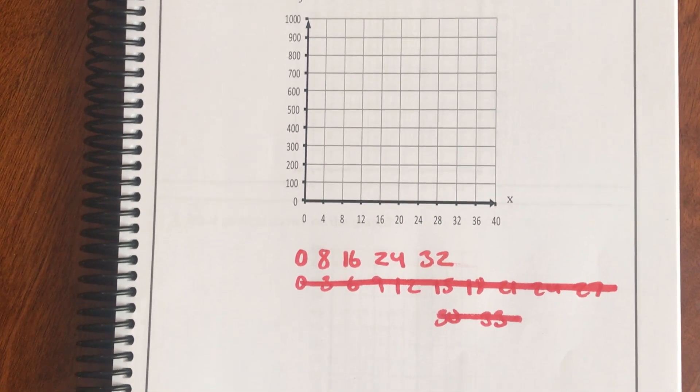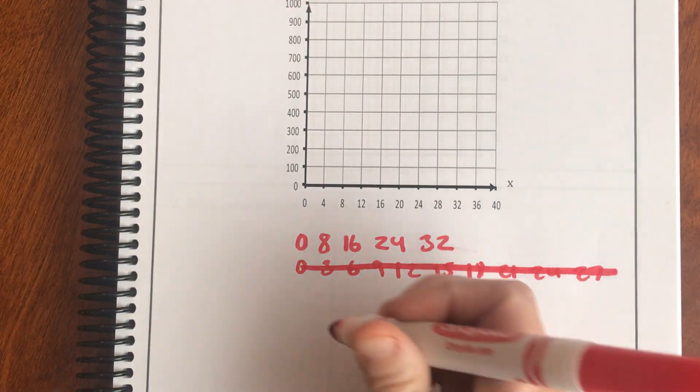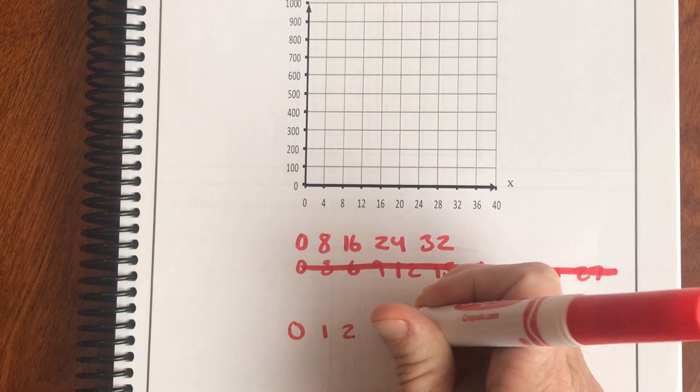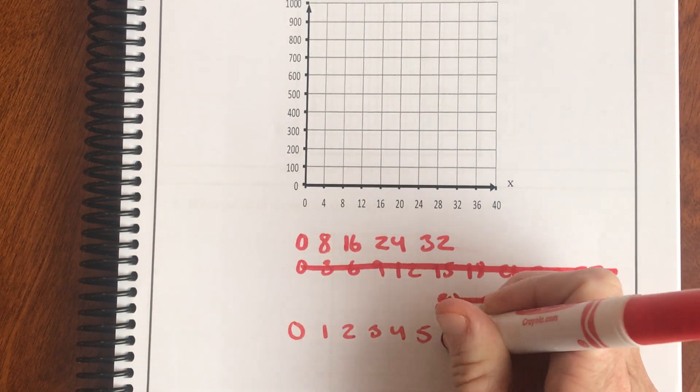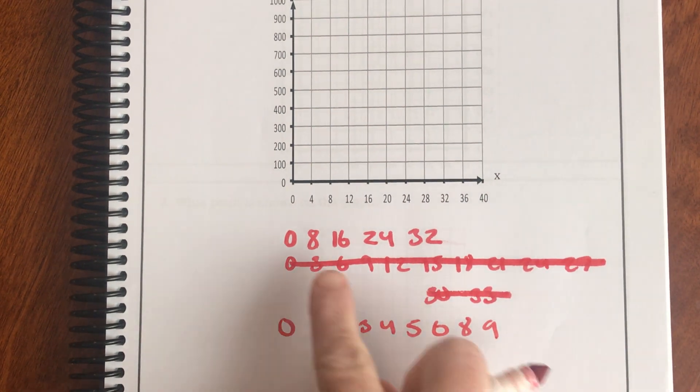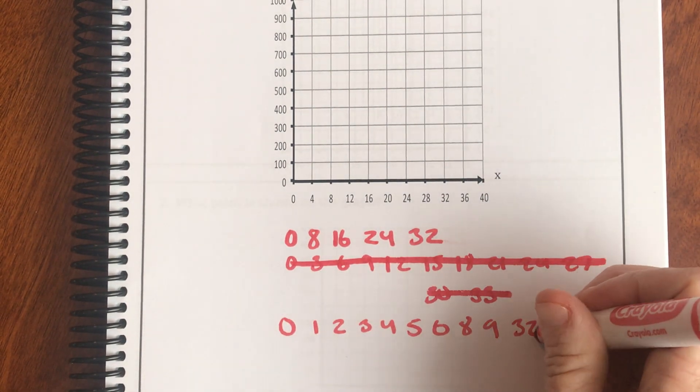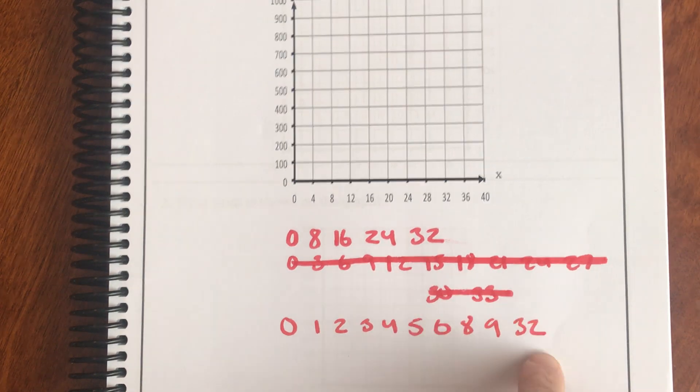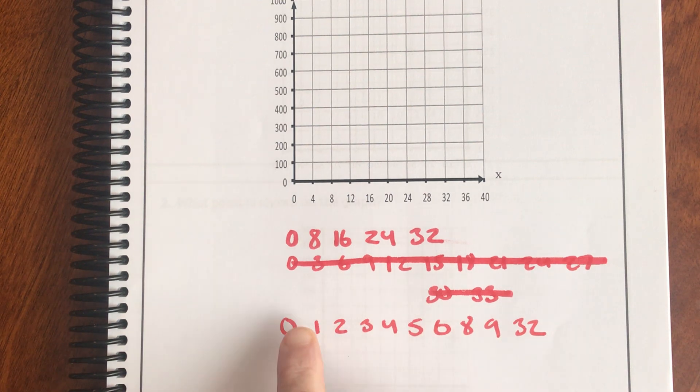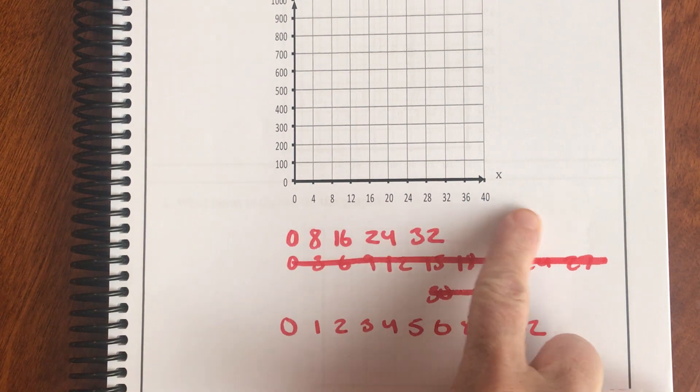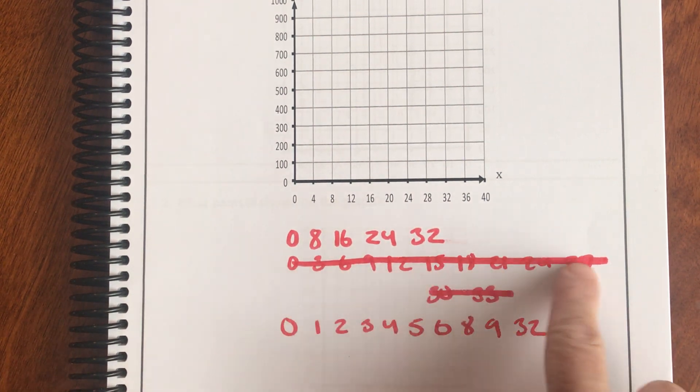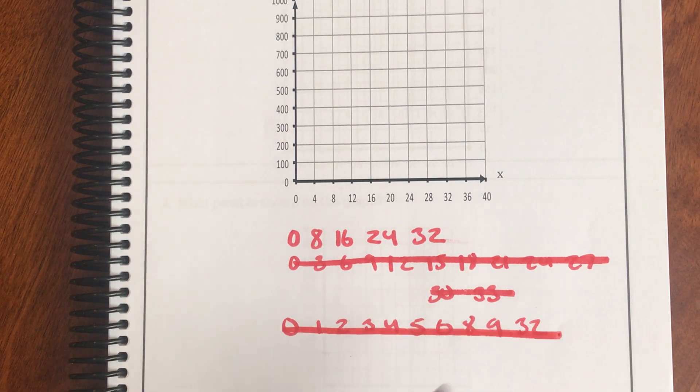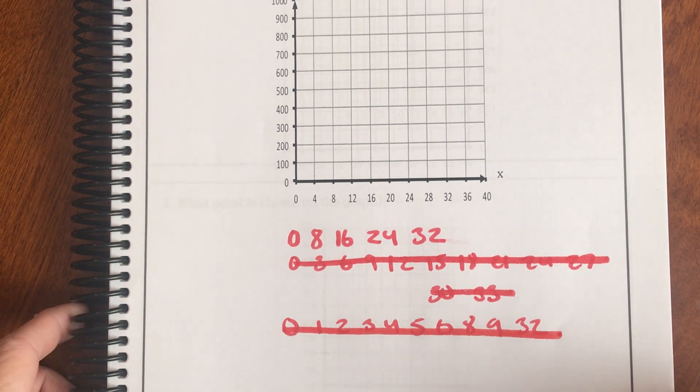And what is not an option is saying, oh, I need 32, so I'm going to start and I'm going to count by ones, and then all of a sudden I'm going to realize, oh shoot, I ran out of space, I'm going to go 32. That's not a choice. You can't just say, oh, I ran out, so I'm going to put the number I need. You have to be going by multiples.